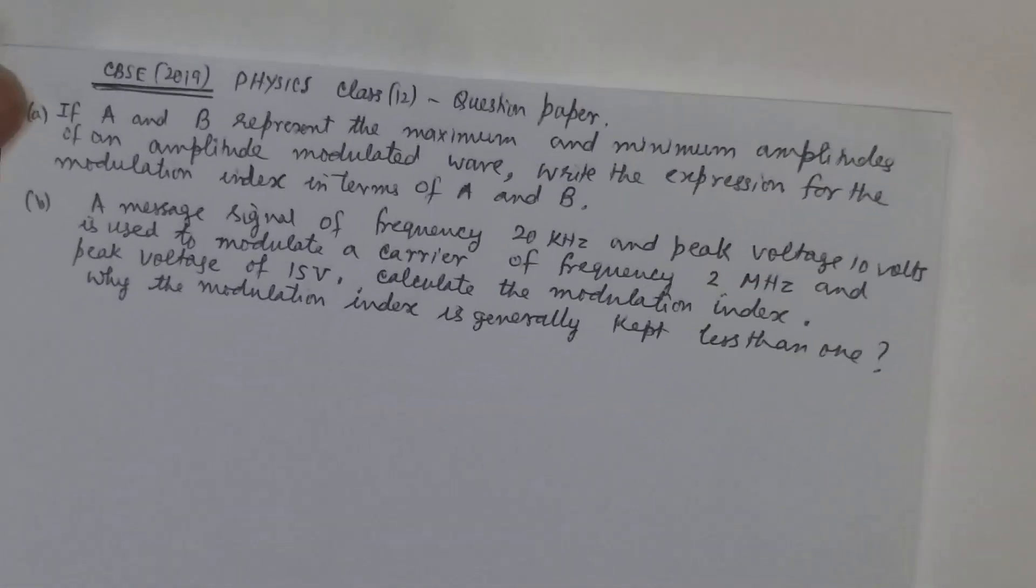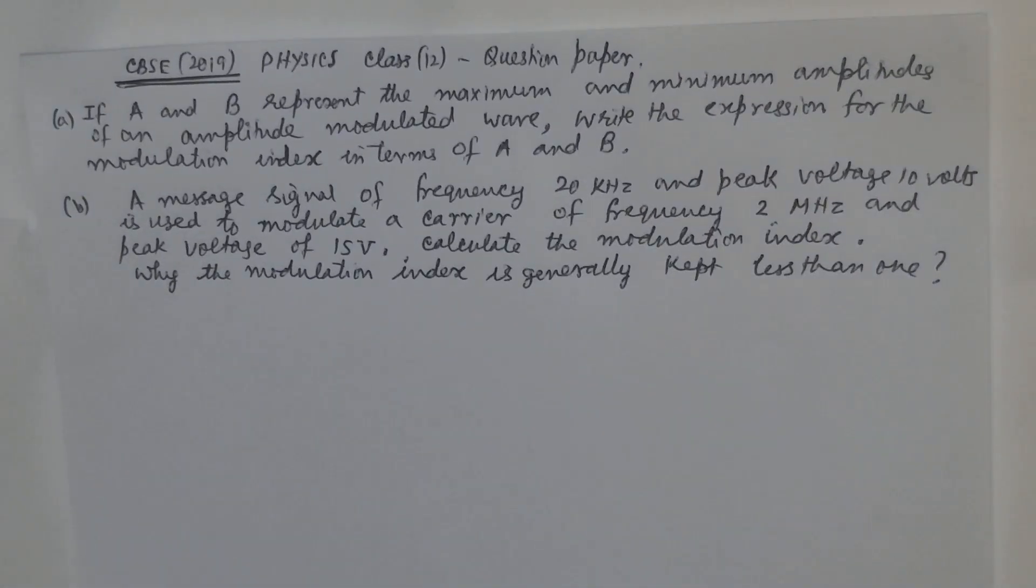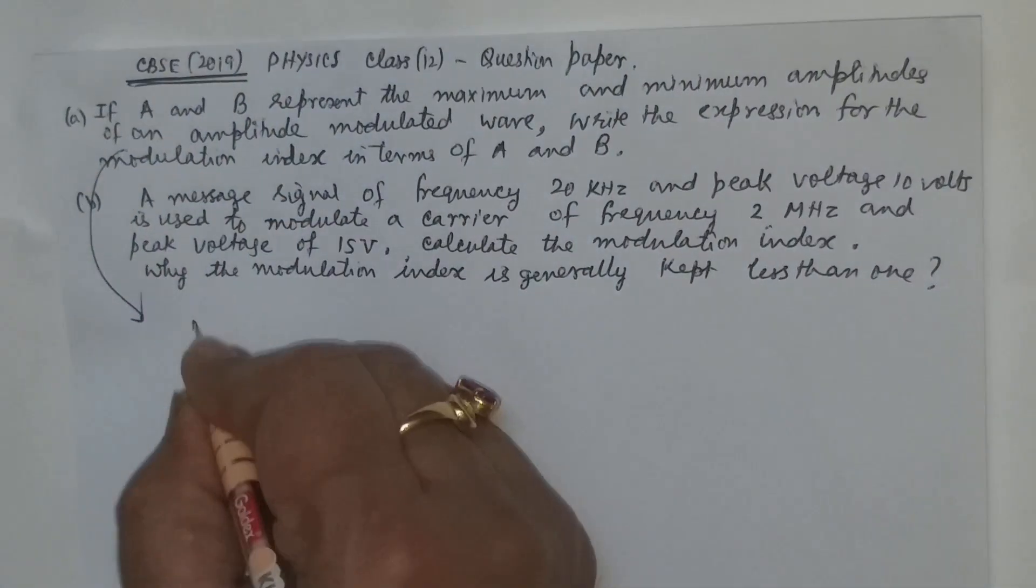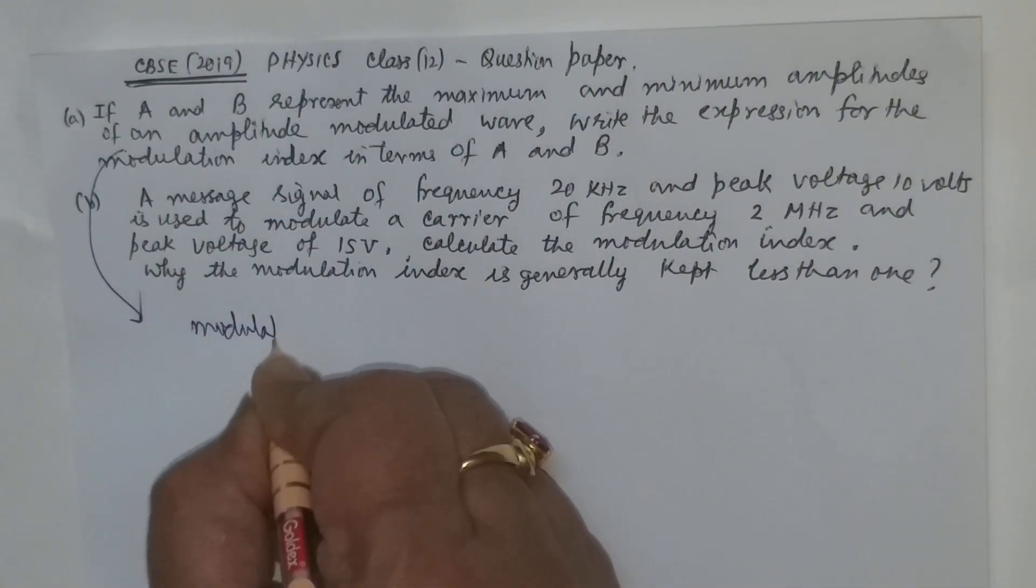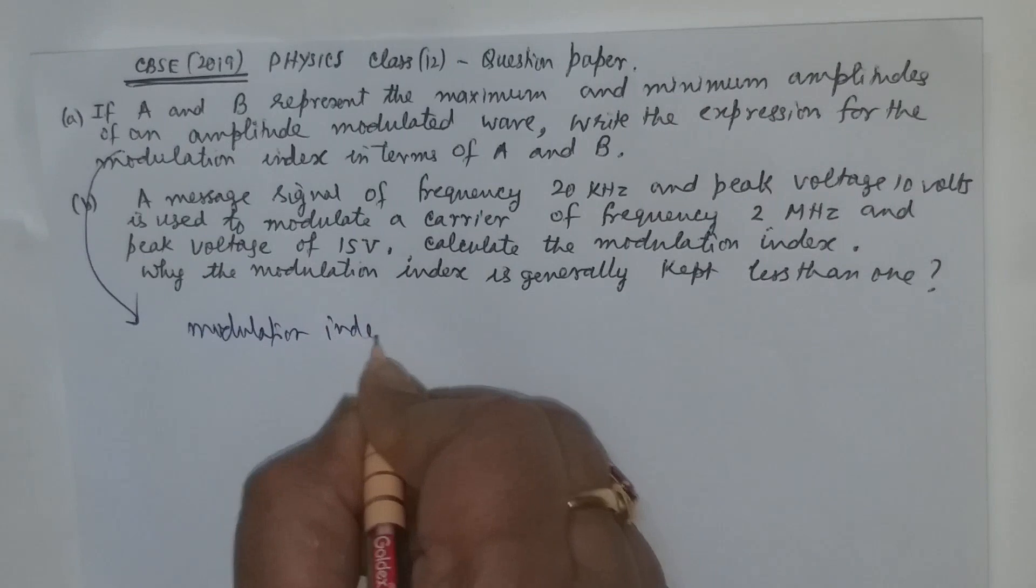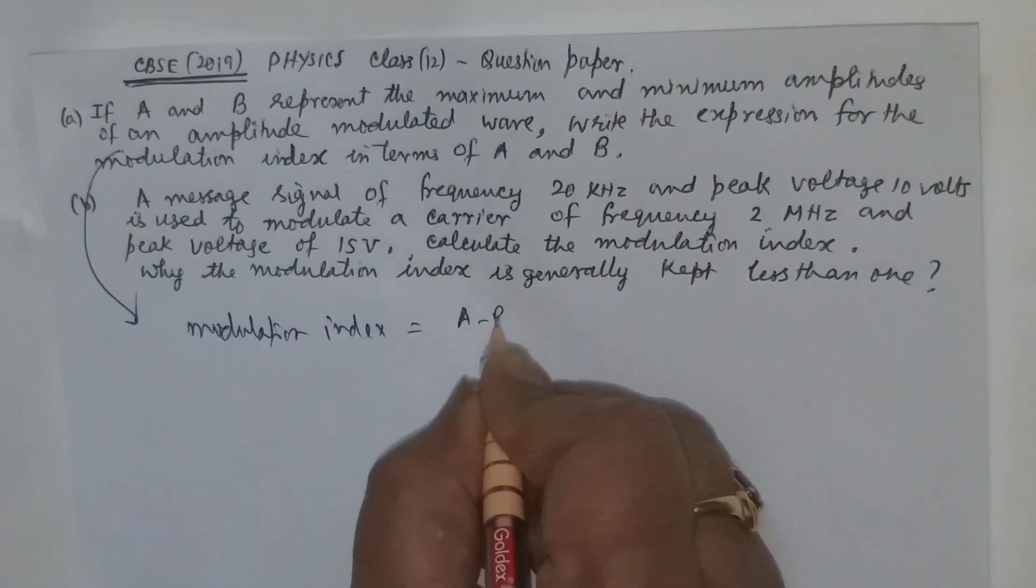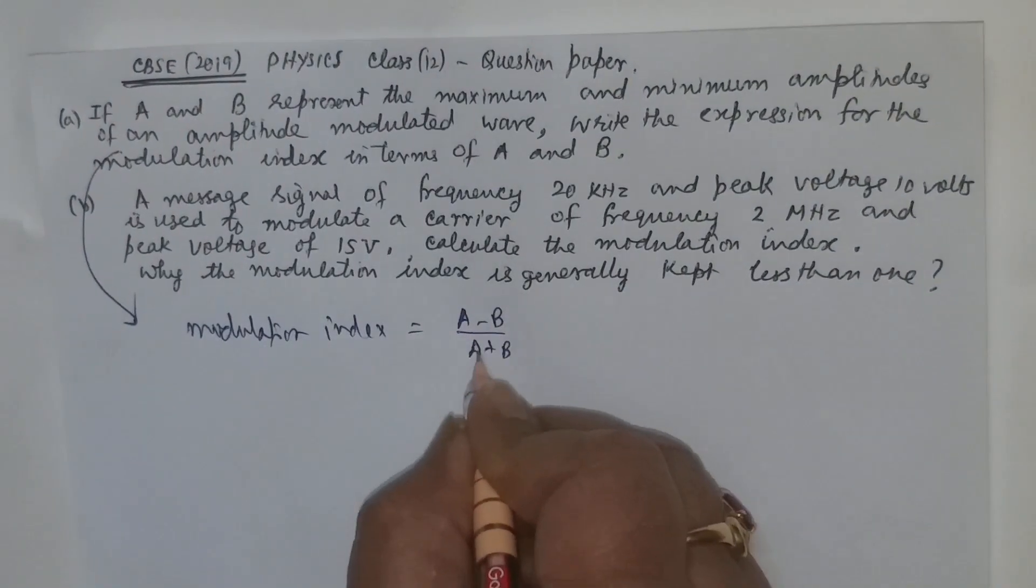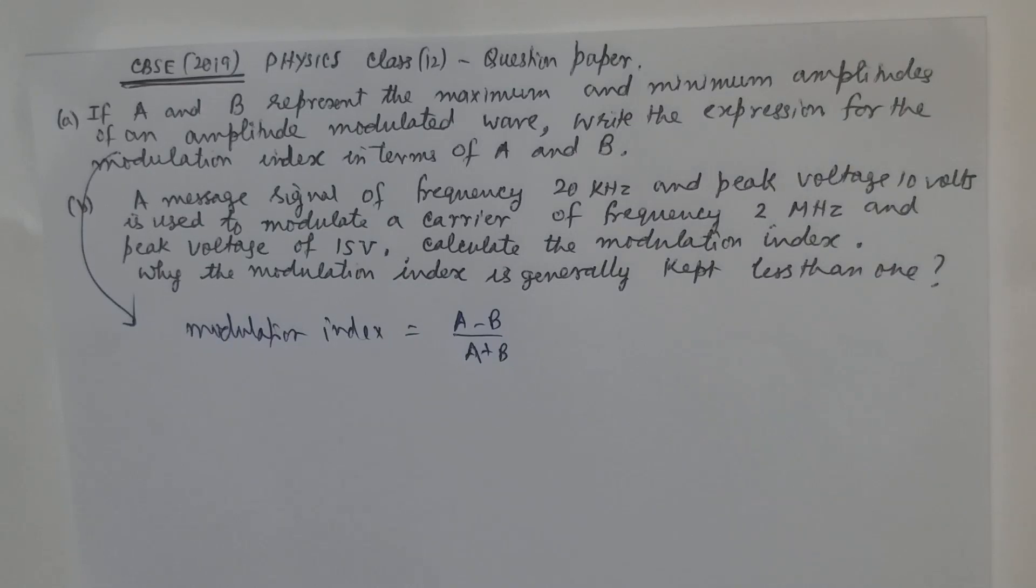The other question follows. If a and b represent the maximum and minimum amplitude of an amplitude modulated wave then write the expression for the modulation index. The modulation index is equal to a minus b divided by a plus b, where a and b are the maximum and minimum.